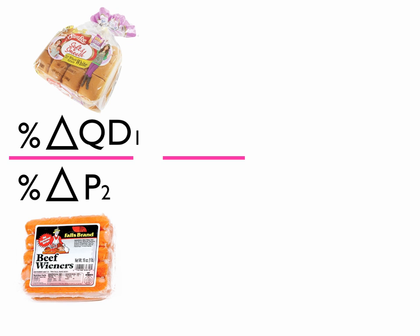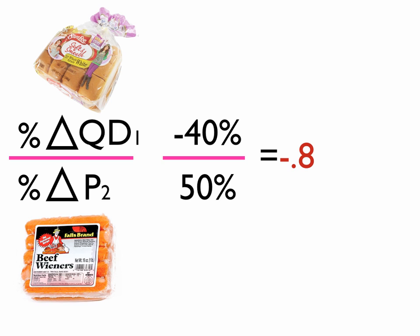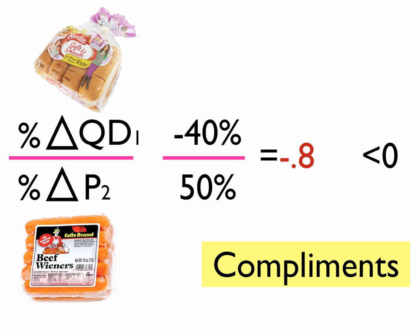Now let's look at hot dog buns and hot dogs. If we increase the price of hot dogs by 50% and find that sales of hot dog buns declined by 40%, our value in this case would be minus 0.8 — noted in red to make that clear. Since it's less than zero, we conclude these two products are complements. That makes sense: if the price of hot dogs goes up, we buy fewer hot dogs, and therefore fewer hot dog buns.